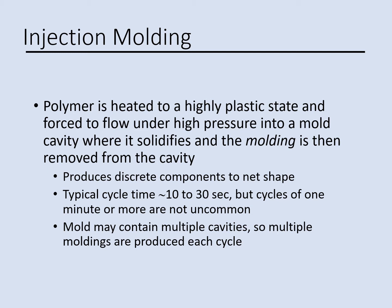With this process, we can produce discrete components to net shape. Net shape means no further process is needed. The cycle time for injection molding is between 10 seconds up to 30 seconds, though it is possible to have more than one minute for some parts. The mold can be designed with multiple cavities so it can produce multiple moldings in one cycle.